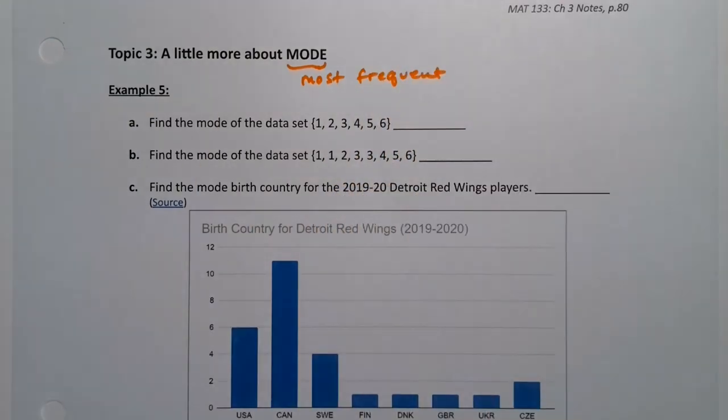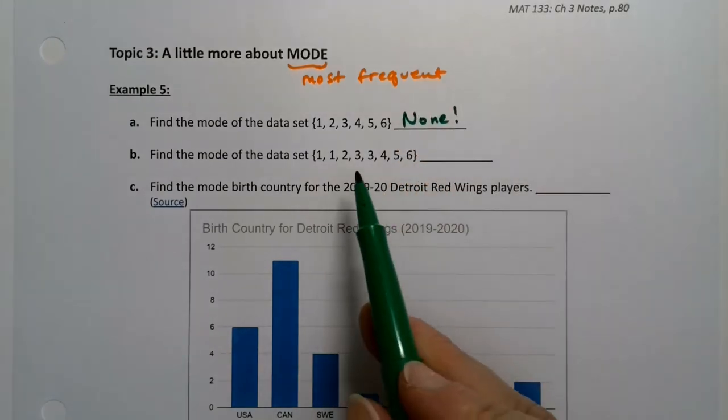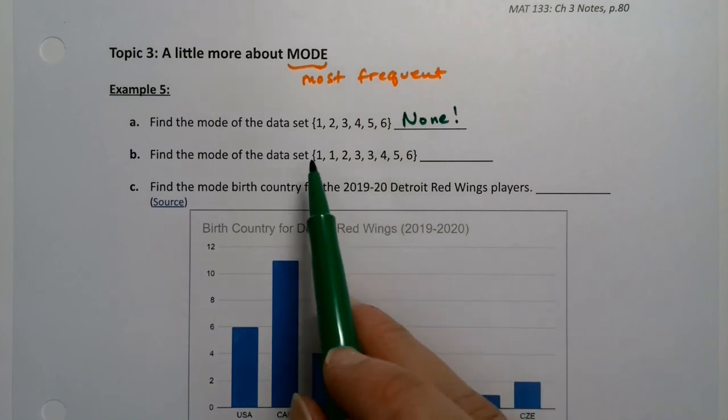All right, so look at the first data set. What's the mode? Well, there isn't one. So none. Or if you like, you can think of all of them. Either way, it's kind of trivial.